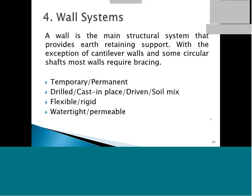Looking into the wall systems available: a wall is the main structural system that provides earth-retaining support. With the exception of cantilever walls and some circular shafts, most walls require bracing. We can classify walls as temporary or permanent, and based on how they're constructed — drilled, cast-in-place, driven, soil mix. Based on wall rigidity: flexible, rigid, or semi-rigid. And based on water-tightness: watertight or permeable. There's nothing totally waterproof — water will always find a way in.